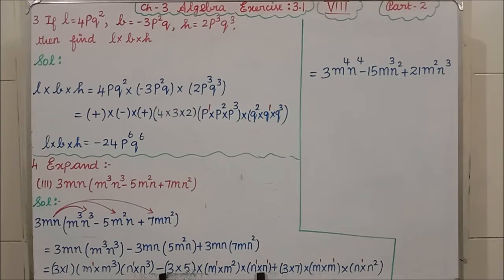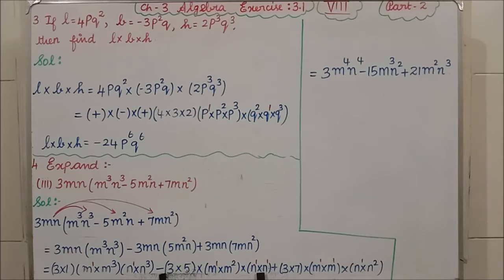What are the concepts we have learnt? We have learnt about what is constant, what is variable, what is like term, what is unlike term and what is coefficient. We have also learnt about types of algebraic expression — four types: monomial, binomial, trinomial and polynomial.